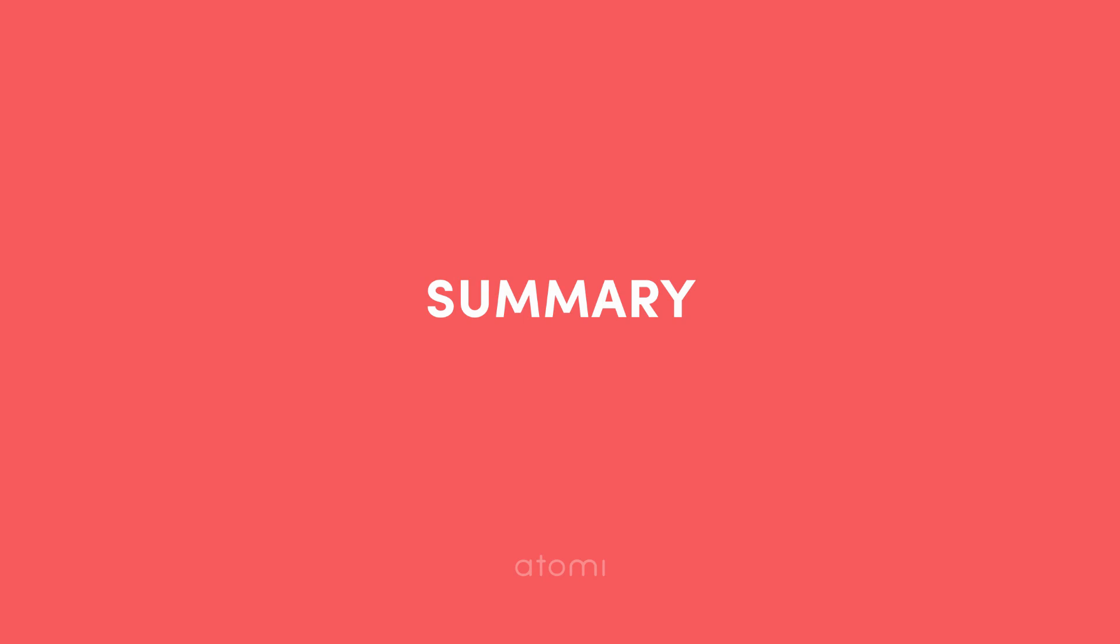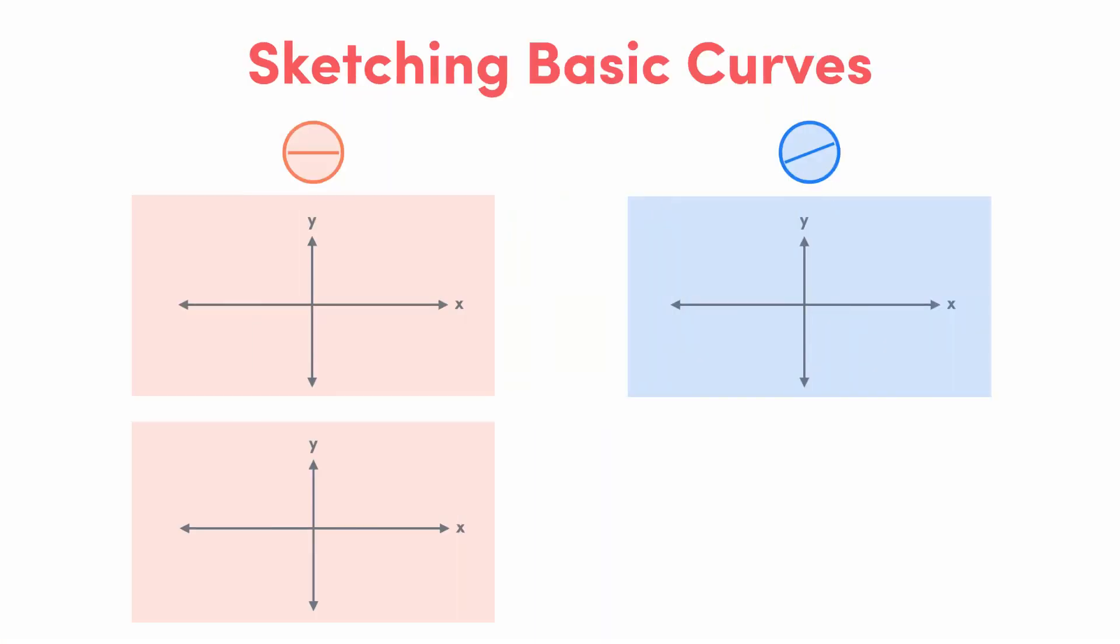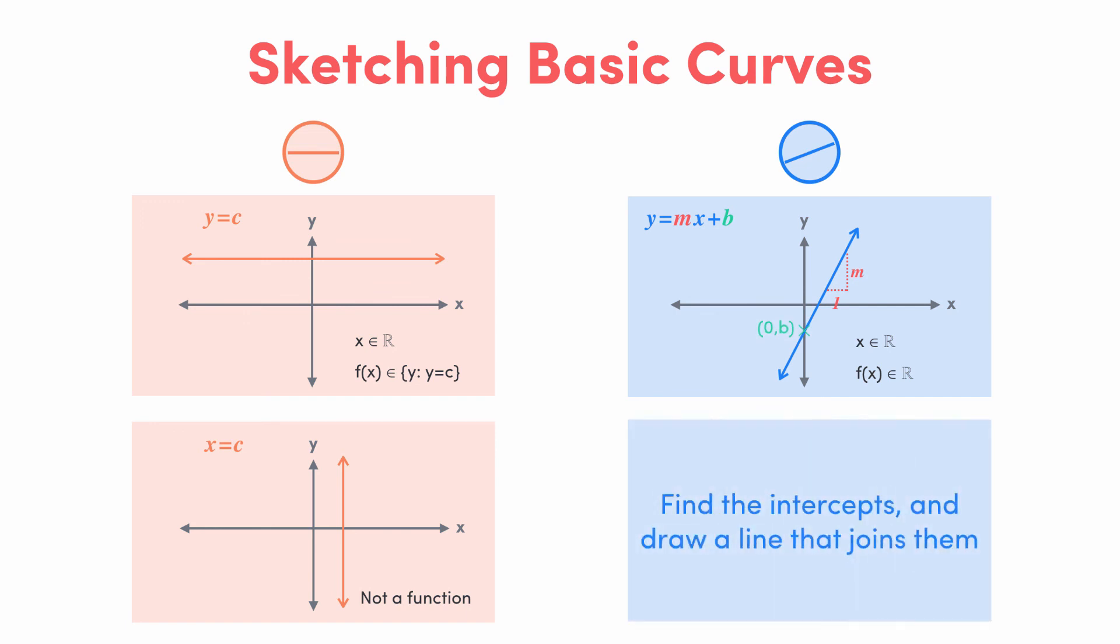Ok, let's wrap it up there for today. Firstly, we revise the graphs of constant functions. Graphs of y equals some constant c are flat, and graphs of x equals some constant c are vertical. Straight lines given by y equals mx plus b have a gradient of m and a y intercept of b. To sketch the line, we find and label the x and y intercepts, and join these with a straight line.